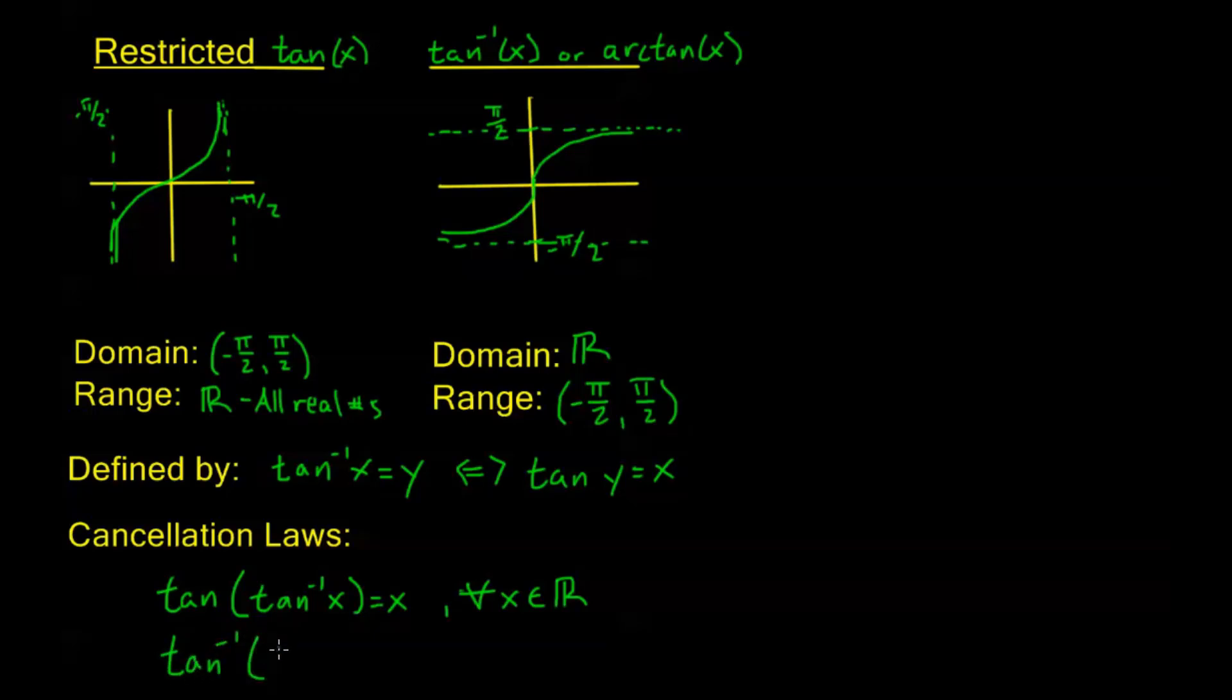We have our second cancellation law: tangent inverse of tangent x equals x. Now, this one is going to have a restriction. This is only going to be true for the restricted domain of tangent, just like before with sine and cosine. So this is for any x between negative pi over 2 and positive pi over 2, and I'm using strictly less than here. This is not less than or equals like we had in sine and cosine. This bottom one always does have a solution, but sometimes we're going to need to evaluate the tangent inside before applying that inverse function.